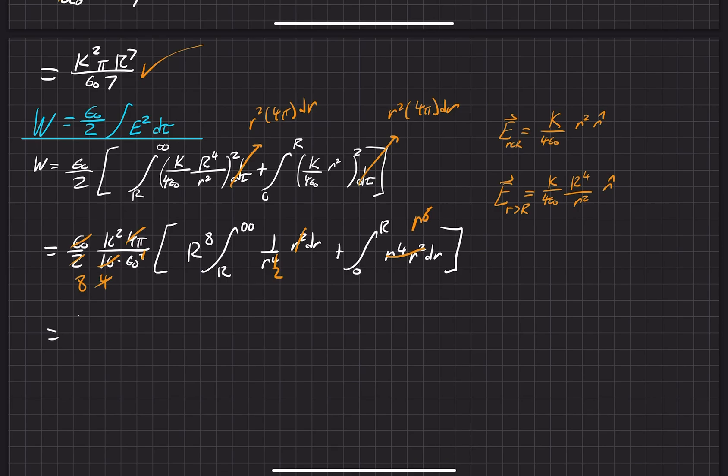So what we have here is k squared pi, 8 to the epsilon naught. Now we have a bracket, we can evaluate our integrals. So we have a big R to the eighth, and this evaluates to a negative 1 over r from infinity to big R plus an r to the seventh over 7 from r to zero, and bracket.